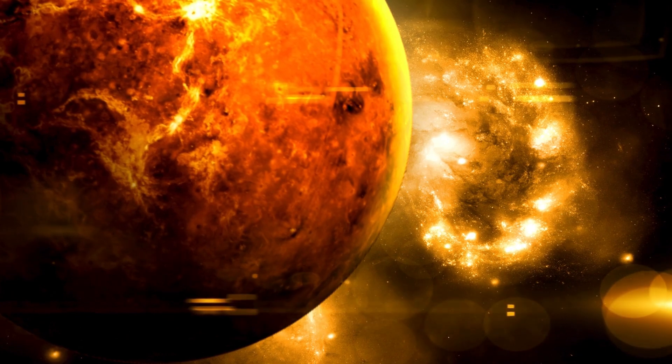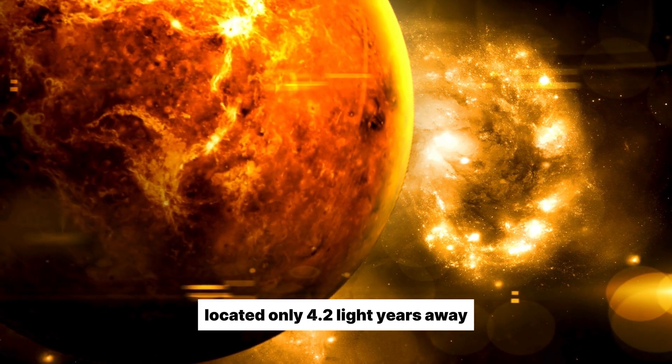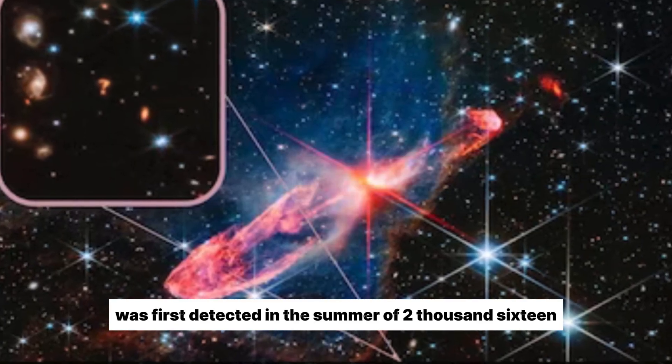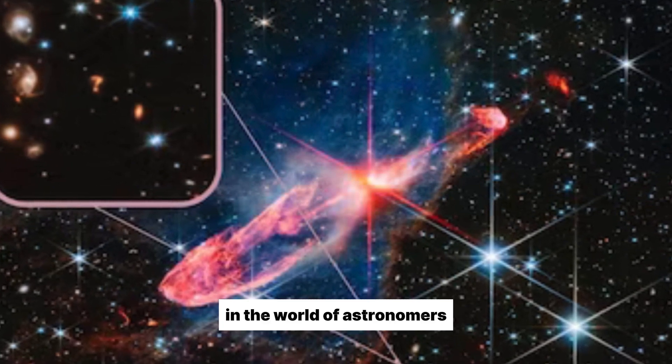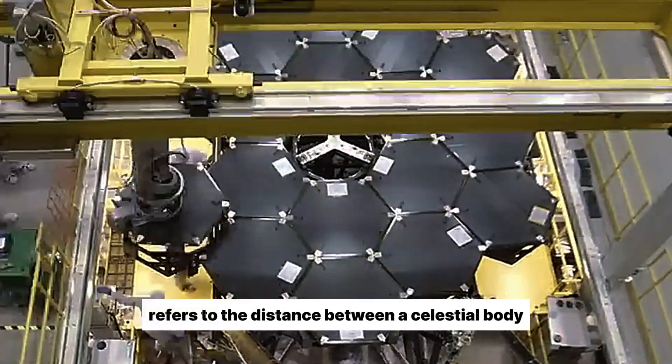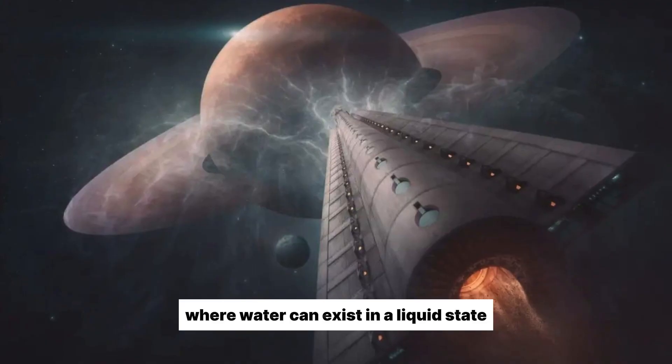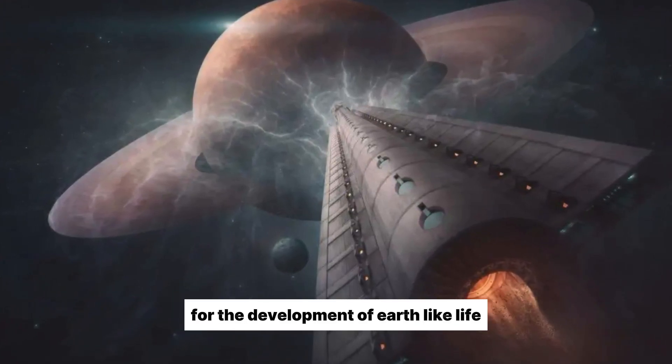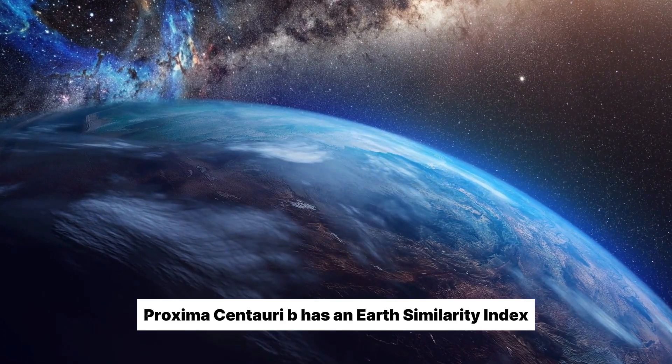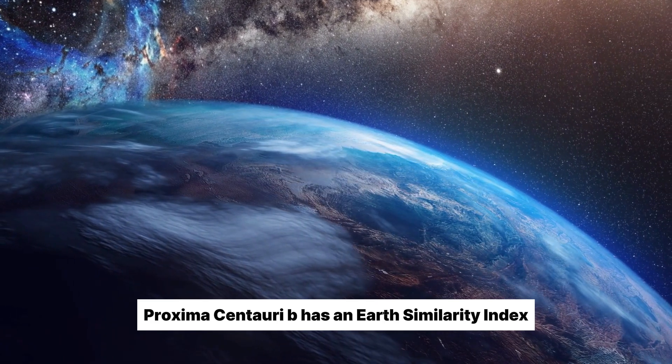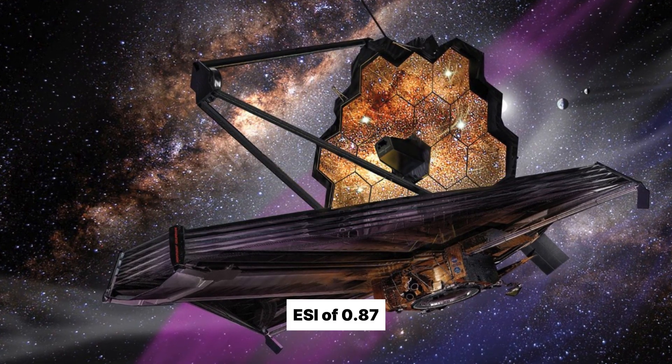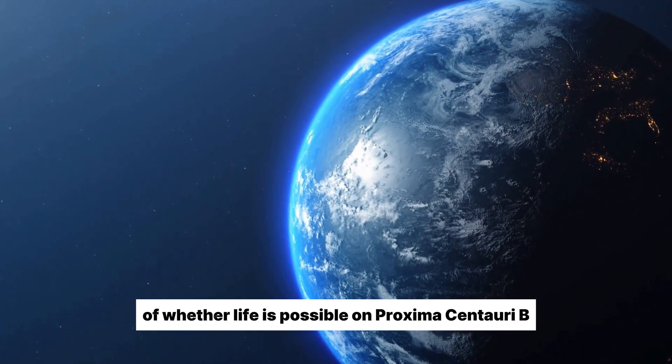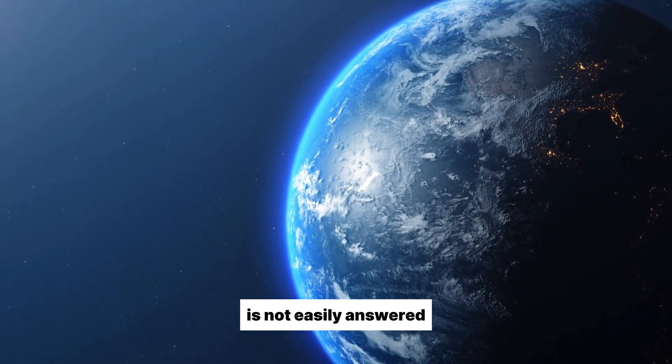Proxima Centauri B, located only 4.2 light-years away, was first detected in the summer of 2016 using the radial velocity method. In the world of astronomers, the habitable zone refers to the distance between a celestial body and its parent star, where water can exist in a liquid state. Liquid water is a fundamental prerequisite for the development of Earth-like life. Proxima Centauri B has an Earth Similarity Index, ESI, of 0.87, indicating its similarity to our planet. However, the question of whether life is possible on Proxima Centauri B, or whether it has already developed there, is not easily answered.